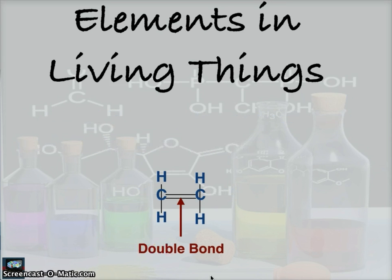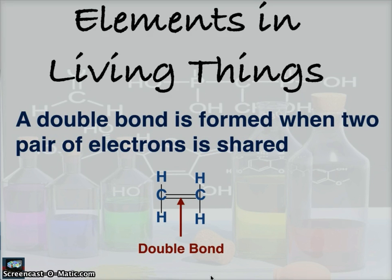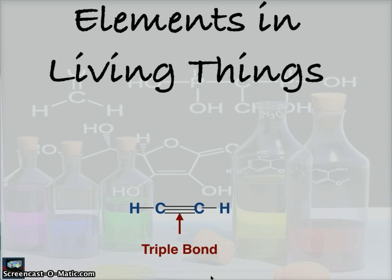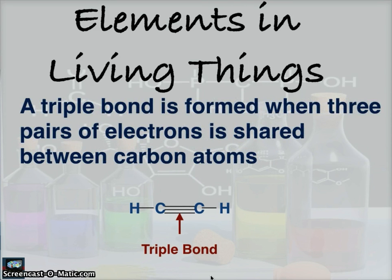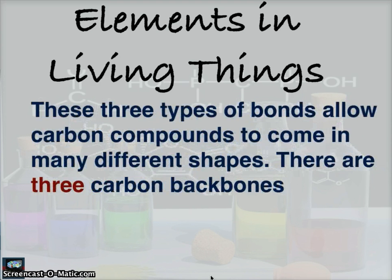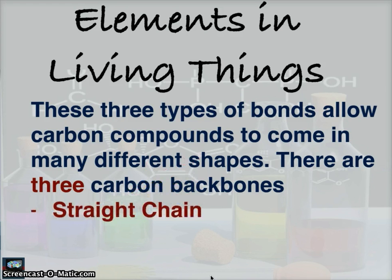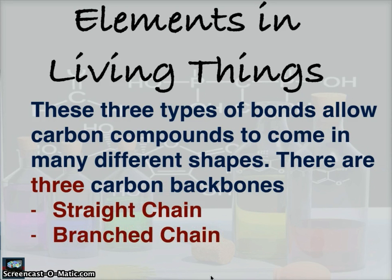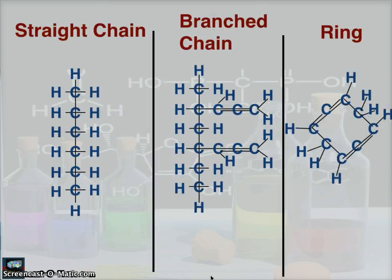This is a double bond — it is formed when two pairs of electrons are shared. And this is a triple bond — it is formed when three pairs of electrons are shared between carbon atoms. These three types of bonds allow carbon compounds to come in many different shapes.